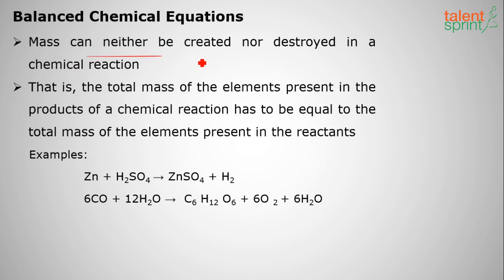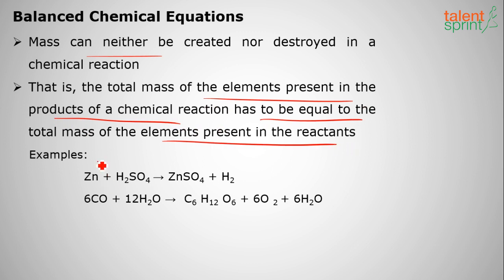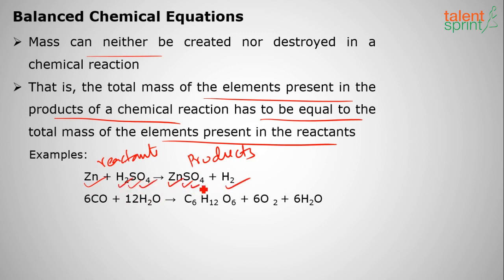As already discussed, mass and energy can be neither created nor destroyed. So the total mass of the elements present on the reactant side has to be equal to that on the products side. Reactants are on the left-hand side and products are on the right-hand side. We verify this by checking atoms: two hydrogens, two hydrogens, one sulfur, one sulfur, four oxygens — they are balanced.